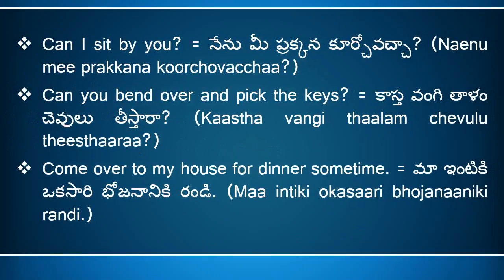'Can I sit by you?' means 'nenu mi prakkana kurcho vachcha.' Here, 'can I sit' means 'nenu kurcho vachcha,' 'by' means 'prakkana,' and 'you' means 'me.' Actually, 'you' means 'miru,' but in this sentence we have to say 'me.' So the full sentence is 'nenu mi prakkana kurcho vachcha.'